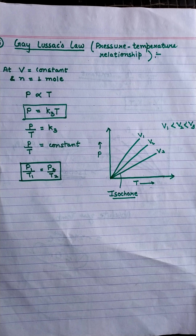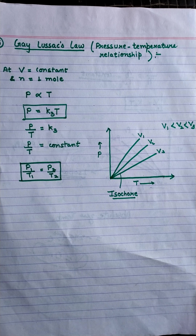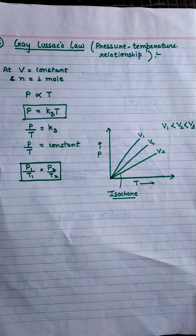The next law is Gay-Lussac's law, which gives us an idea about the pressure and temperature relationship. During summer, the pressure of air in tires increases because temperature increases, which causes kinetic energy of molecules to increase and pressure becomes higher. In winter, the pressure of gas in the tire decreases considerably because the temperature decreases. In this way, Gay-Lussac gave his law.